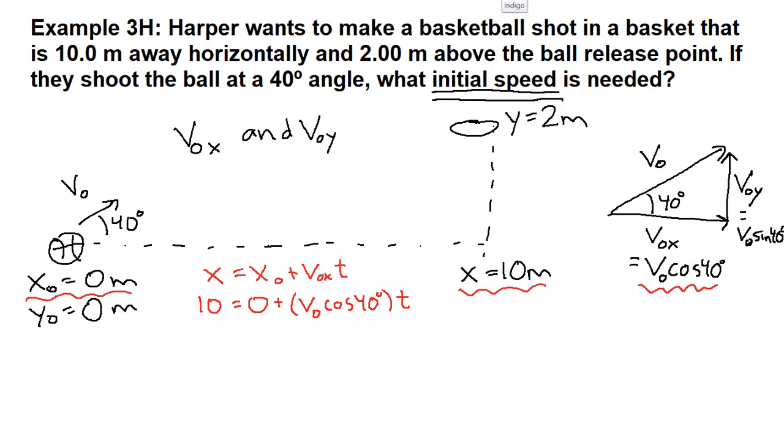In the y direction, we have the initial location, the final location, and the initial y velocity. If we write down the yt equation, we'll see that the unknowns match those from the previous equation. 2 equals 0 plus V0 sine 40 degrees times t minus 1 half g, we'll go ahead and put 9.8, so 9.8 t squared.